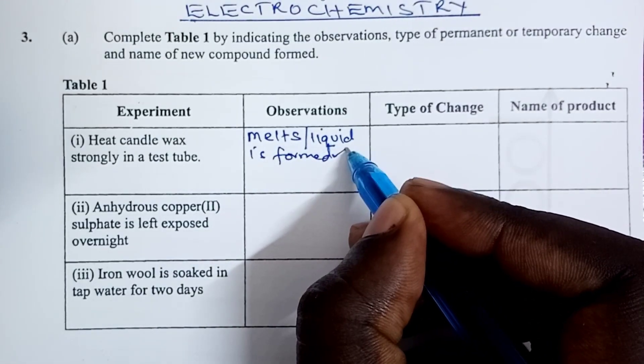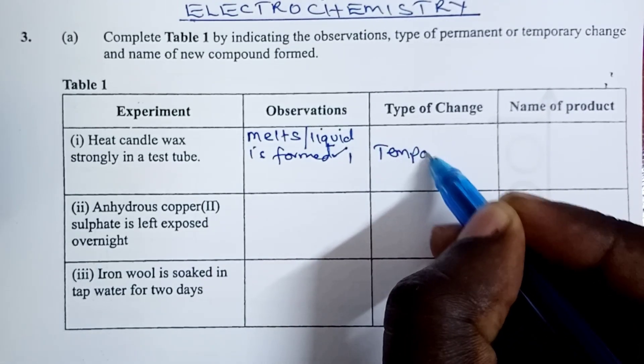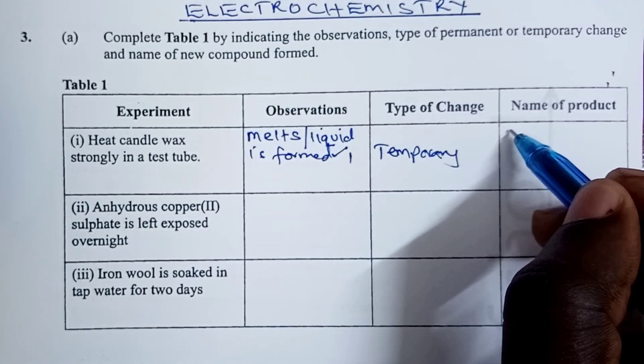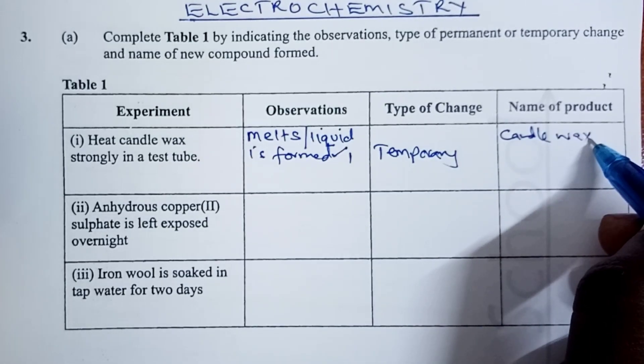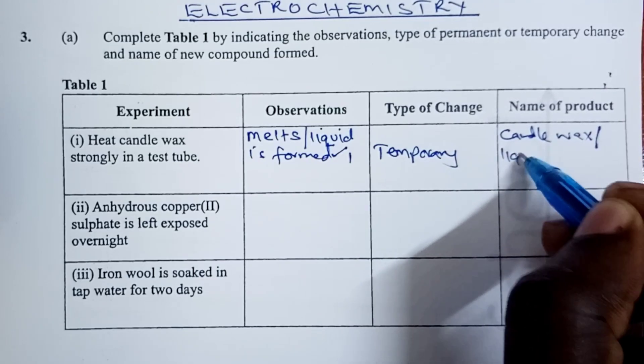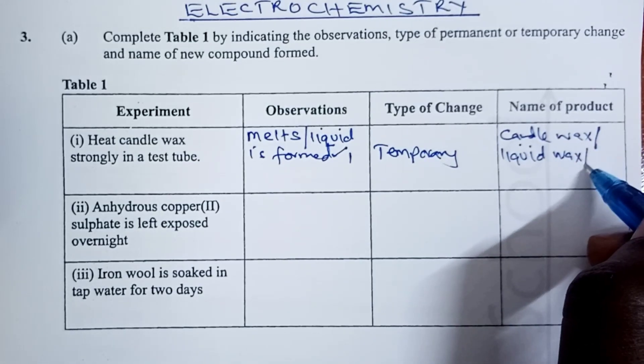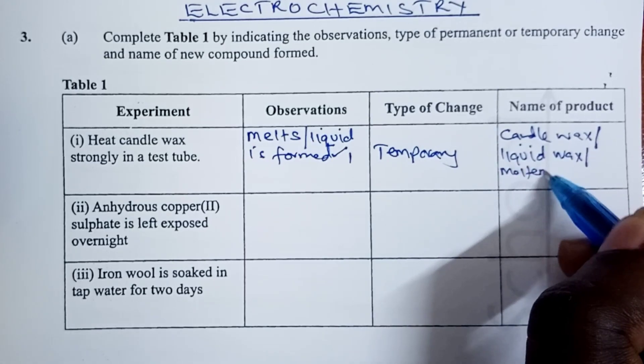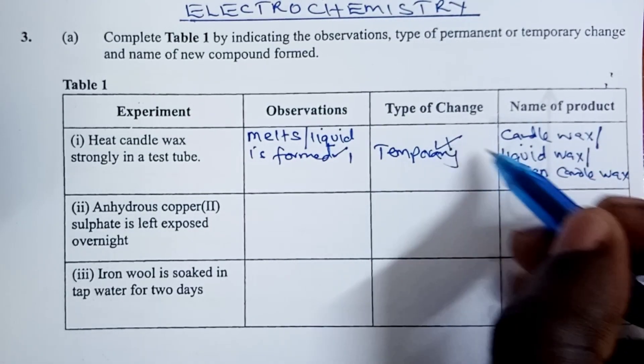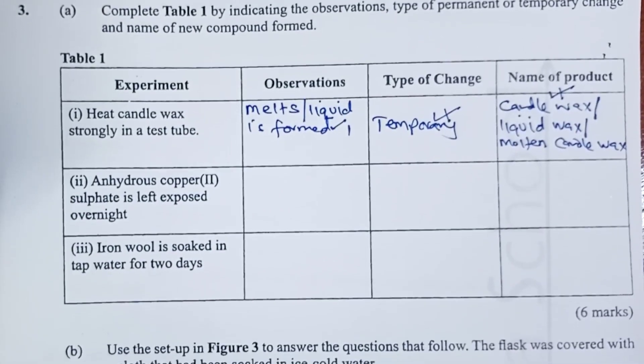This would be one mark. Type of change is obviously temporary, and name of the product remains candle wax. Or, a student had the option of telling us that the product is called liquid wax, or molten candle wax. For the type of change, a half a mark, and for the name of product, another half. That is, two marks for the first experiment.